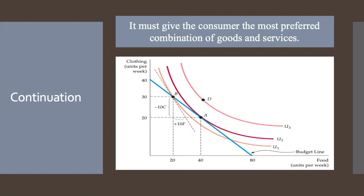Therefore, point A maximizes the consumer's satisfaction. The basket which maximizes satisfaction must lie on the highest indifference curve that touches the budget line. Point A shows the point of tangency between the indifference curve and the budget line.